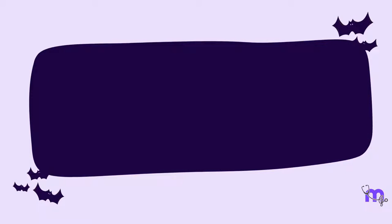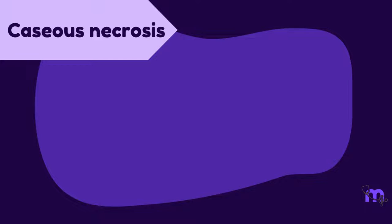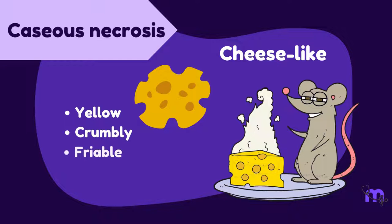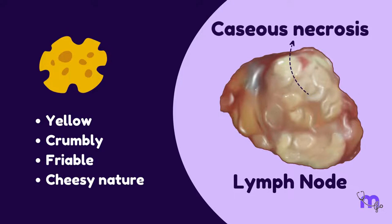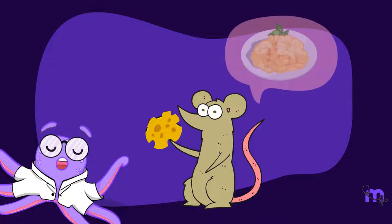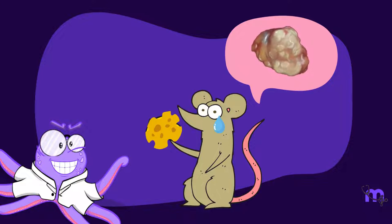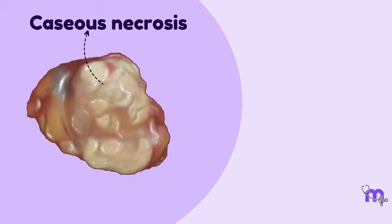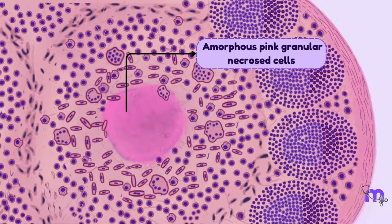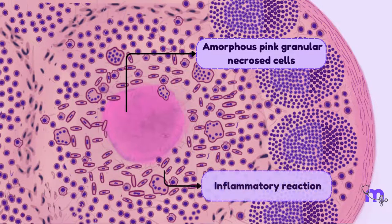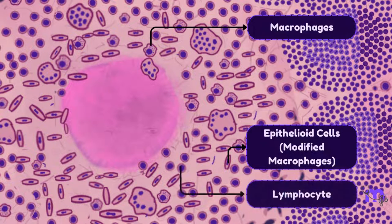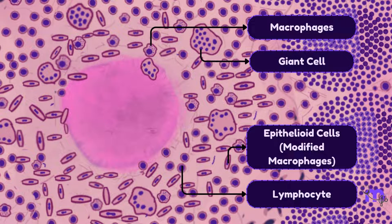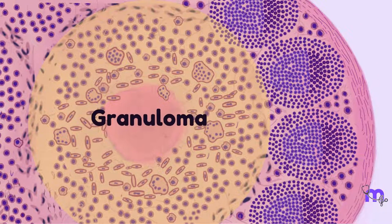Caseous necrosis means cheese-like, due to its yellow, crumbly, friable, cheesy nature on gross morphology. This is a picture of a lymph node with areas of cheesy necrosis. Caseous necrosis is most commonly associated with tuberculosis, where amorphous pink granular necrosed cells and bacteria are surrounded by an inflammatory reaction including macrophages, epithelioid cells (which are modified macrophages), lymphocytes, monocytes and giant cells called Langhans cells. This entire structure is called a granuloma. We will be discussing granulomatous inflammation in further sessions.